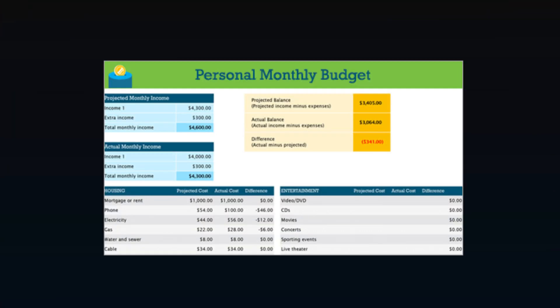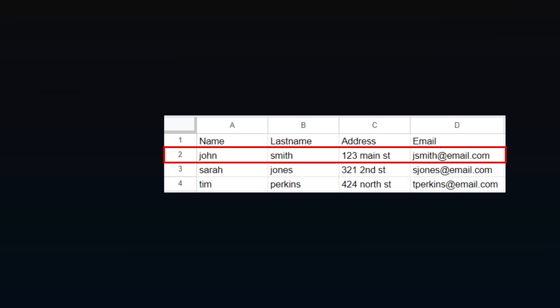Picture ringing up a purchase with all the items, payment method, and date — that entire set is considered a record, or in a database, a row. To help you relate, let's take Excel for example. You've probably used it to organize a household budget or work-related info. Within a database, each row in an Excel spreadsheet is similar to a row in a database.